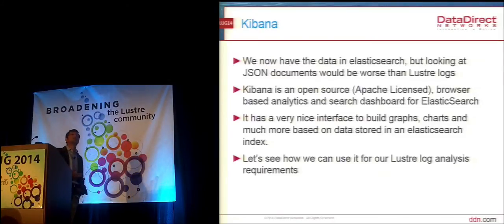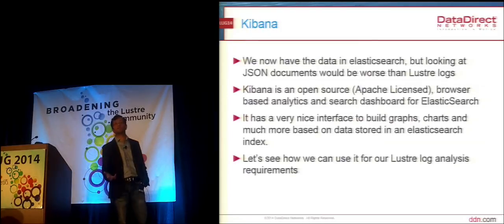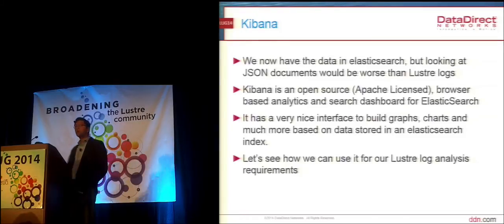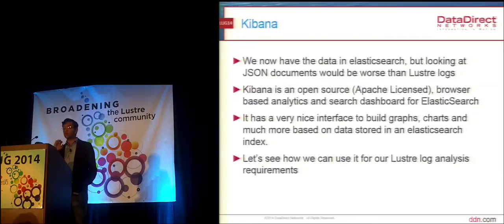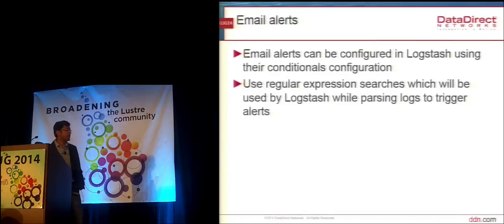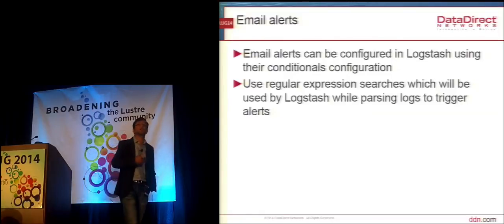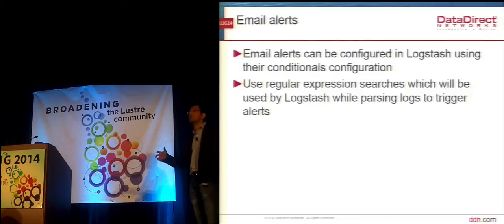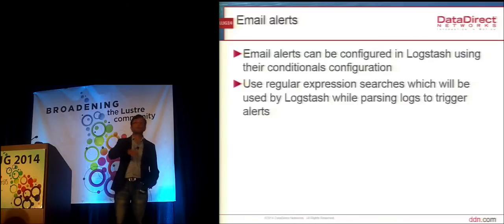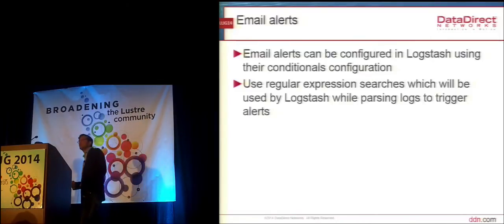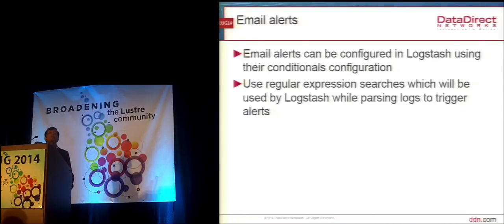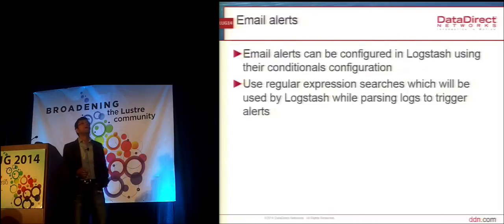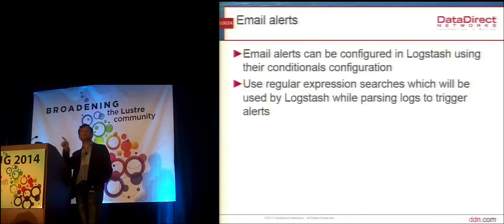Kibana is an open source browser where you can see analytics of the data in Elasticsearch. It comes with some basic UI, but you can also build your own graphs, charts, and write your own alerts. About email alerts — Logstash supports conditionals, so you can configure an email within it and say: if you see an error line, email so-and-so; if you see a warning line, email this ID; if you see a soft lockup, email this ID. So when Logstash is picking up and parsing logs, if it encounters certain keywords or conditionals you've provided, it can send emails or even hit APIs.